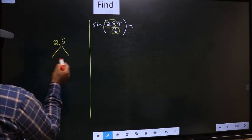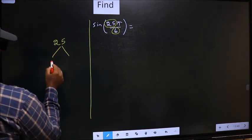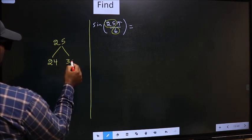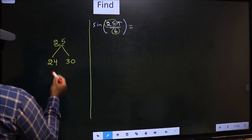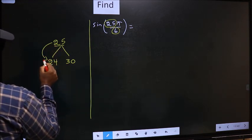And here you write multiples of 6. That is 24 and 30. So now 25 close to which multiple? It is close to 24.